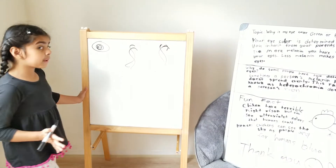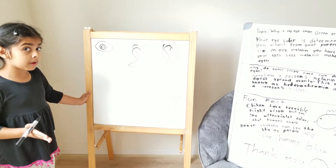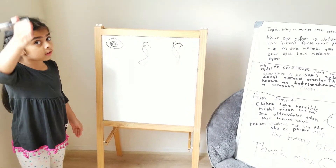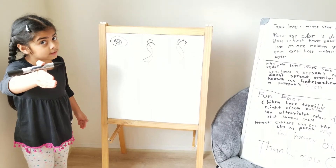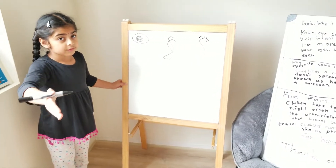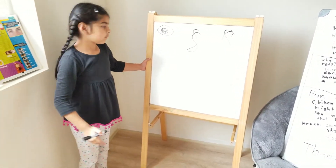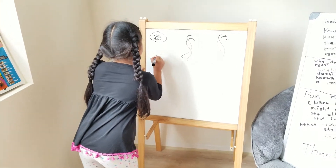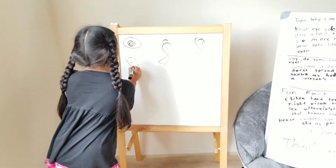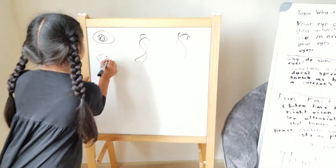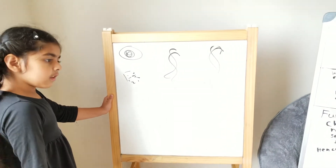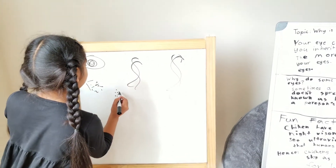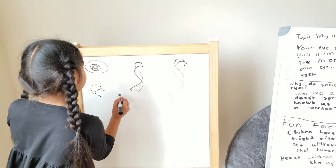So you know a pigment called melanin gives a darker or lighter shade to things. So the more melanin you have, the darker your eyes. The less melanin makes for lighter eyes.